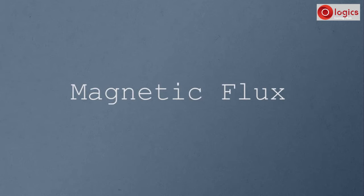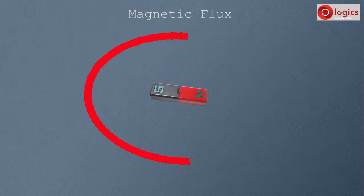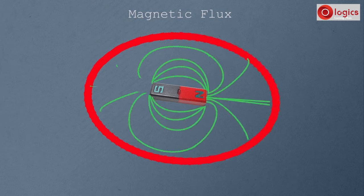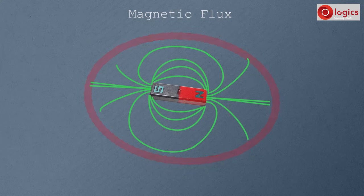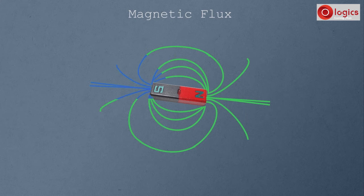Let's understand about magnetic flux. This is a magnet, and this is the magnetic field around it. We know these magnetic field lines consist of magnetic lines of force, which are passing from the north pole to the south pole of the magnet.